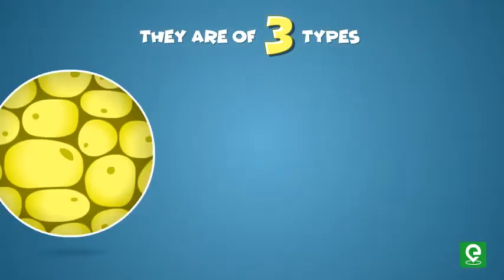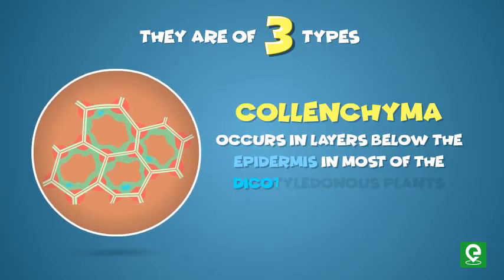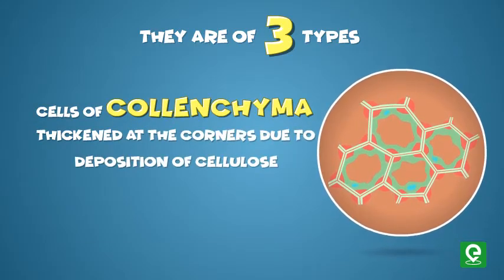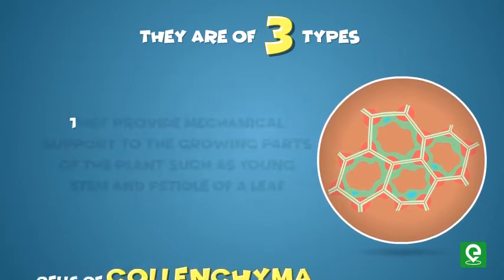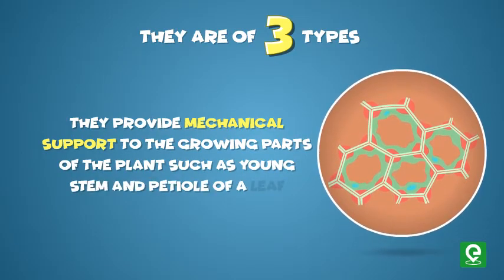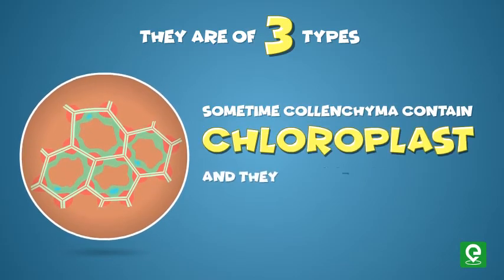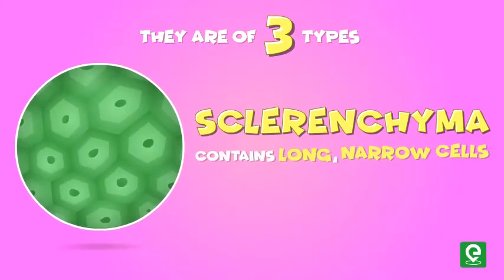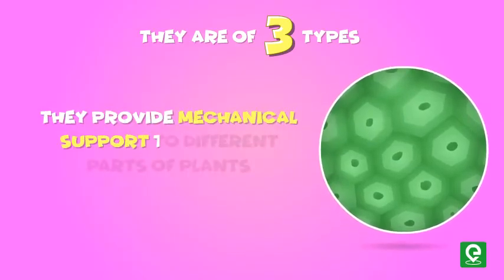Colenchyma occurs in layers below the epidermis in most dicotyledonous plants. The cells of colenchyma thicken at the corners due to deposition of cellulose, hemicellulose, and pectin. They provide mechanical support to growing parts of the plant such as young stems and petioles of leaves. Sometimes colenchyma contains chloroplasts and can assimilate food. Sclerenchyma contains long, narrow cells with thick, lignified cell walls, and provides mechanical support to different parts of plants.